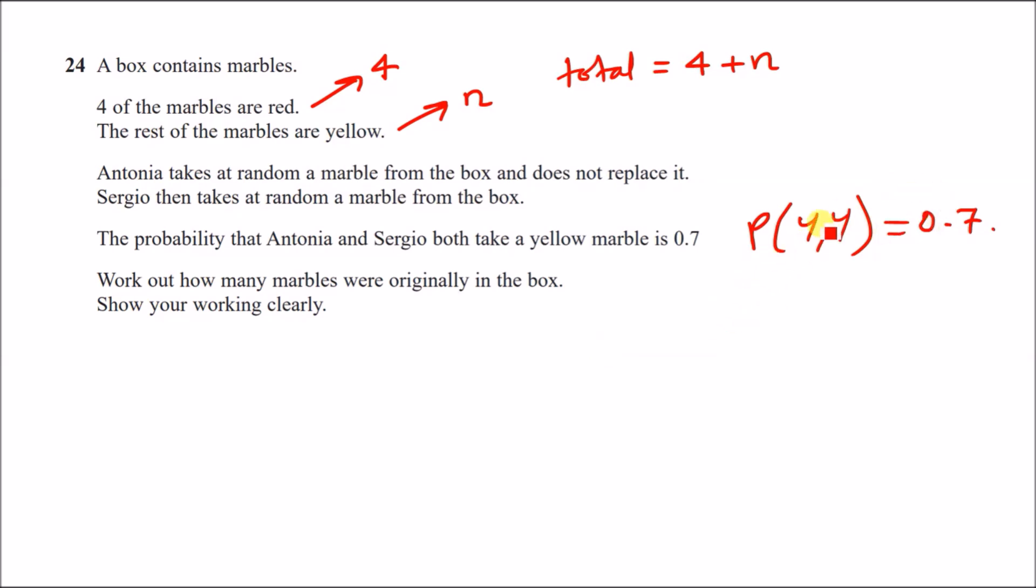Work out how many marbles were originally in the box. Alright, so not too bad. So to do these kind of questions, all you need to do is figure out what is the probability of picking a yellow, algebraically, and then yellow again. Well, to get a probability of yellow and then yellow again, first things first, we have how many yellows? We have N yellows. We have N out of a total of four plus N yellows. And now, the second yellow, so multiply when we go across, we now have one less yellow. So we have N minus one yellows. Now, the same thing applies. This means the total is now four plus N minus one, because you took one yellow.